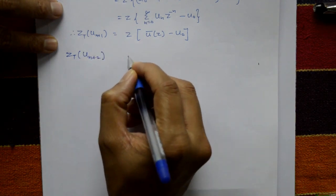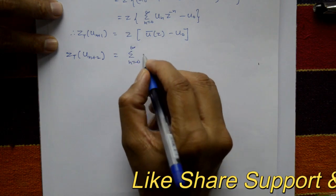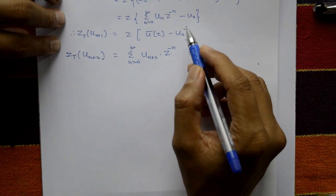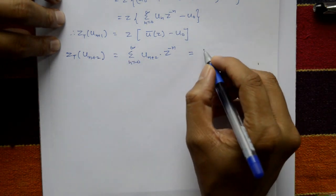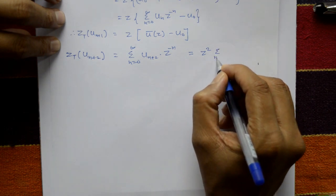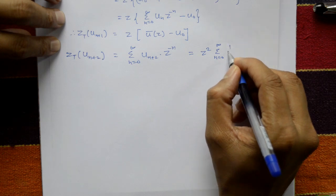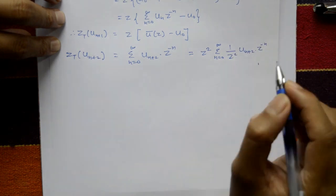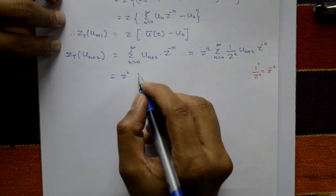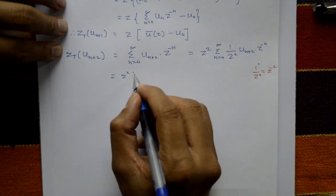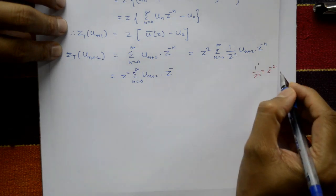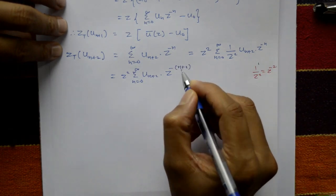For u(n+2): the Z-transform is summation from n=0 to infinity of u(n+2) times Z raised to minus n. Now in the next step, instead of multiplying and dividing by Z as before, we multiply and divide by Z squared. So: 1 upon Z squared equals Z raised to minus 2, giving Z squared into summation from n=0 to infinity of u(n+2) times Z raised to minus (n+2).